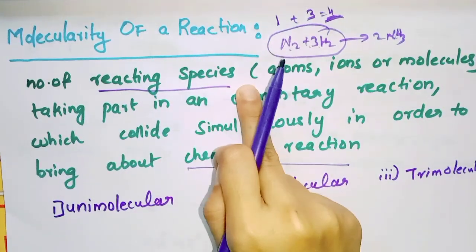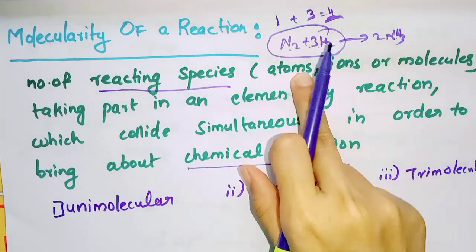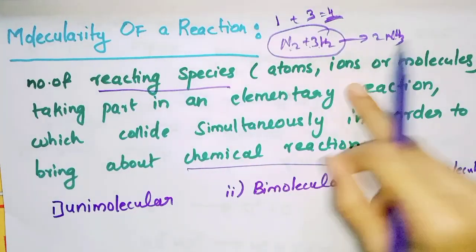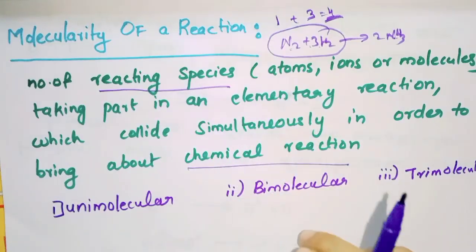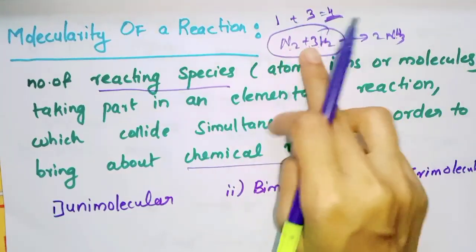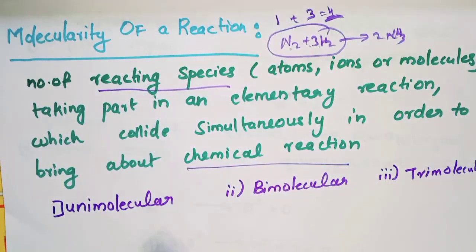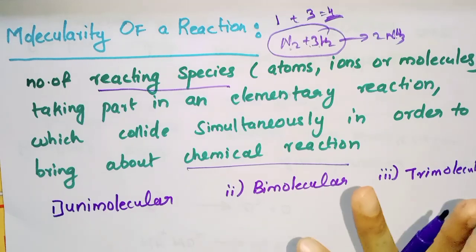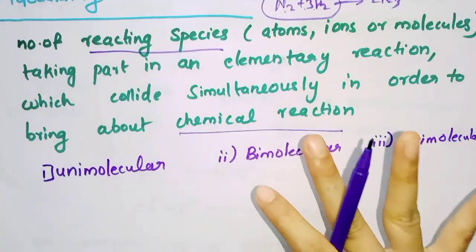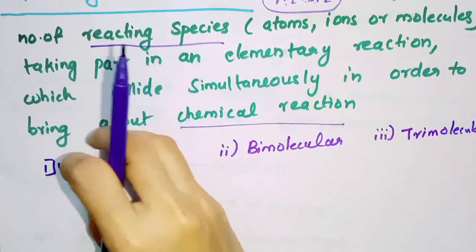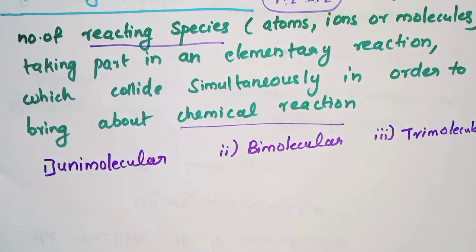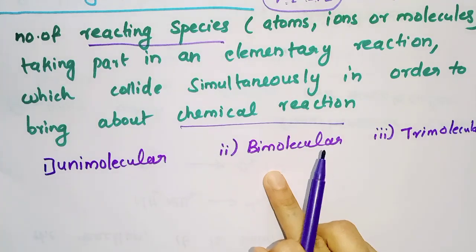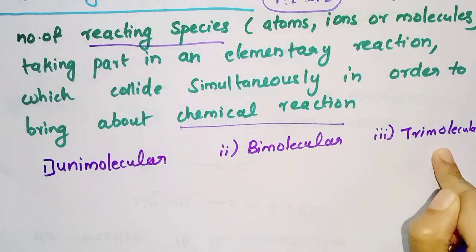Number of reacting species — it can be atoms, ions, or molecules — taking part in an elementary reaction, which collide simultaneously in order to bring about the chemical reaction. There are three types we have to recognize: unimolecular, bimolecular, and trimolecular.